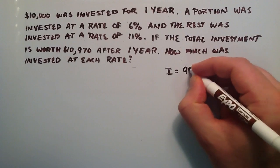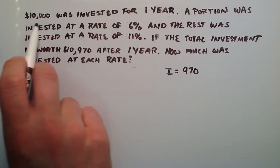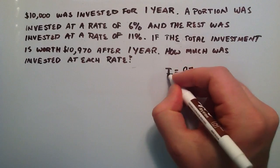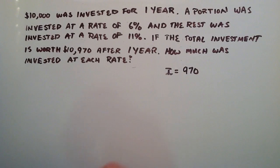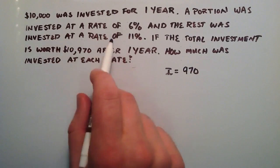That's how much we made in interest off of our principal or our base amount. So our interest is $970 for one year. So now we just need to figure out how much we invest at each rate.